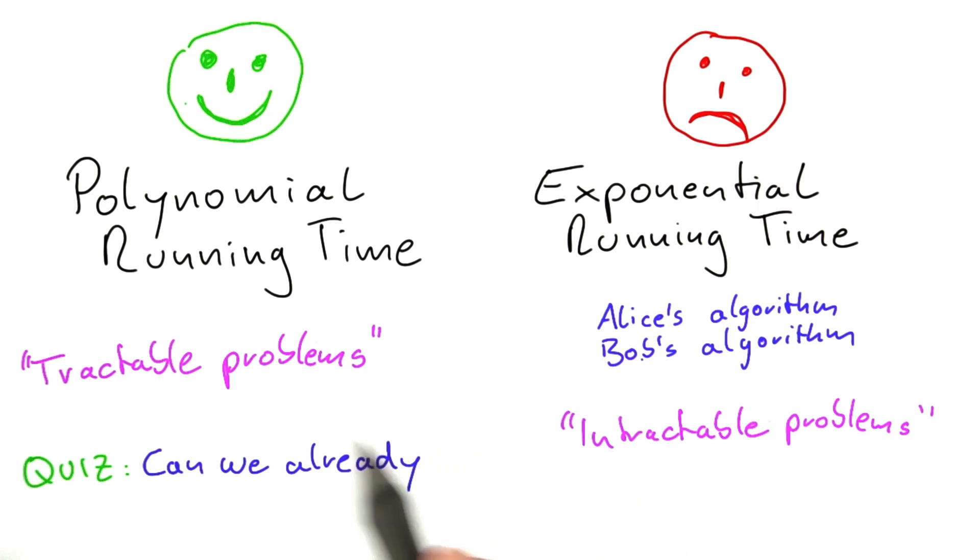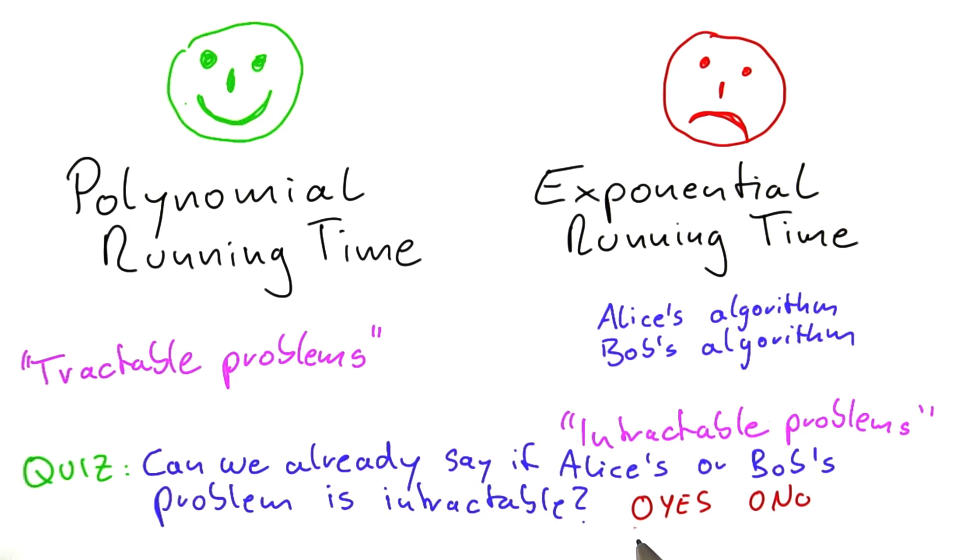Or in other words, can we already say whether Alice's or Bob's problems are intractable or tractable? And I would like you to tell me if you think that is the case. So if we can already say that their problems are intractable, or if there's probably more information that we need.